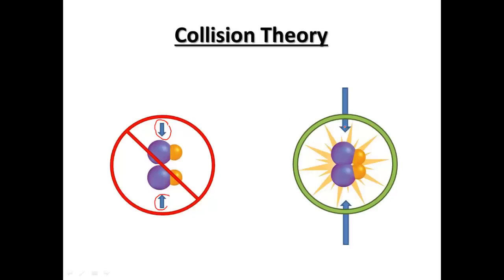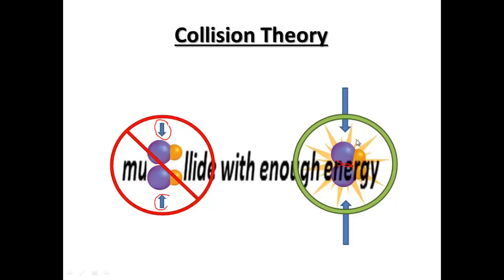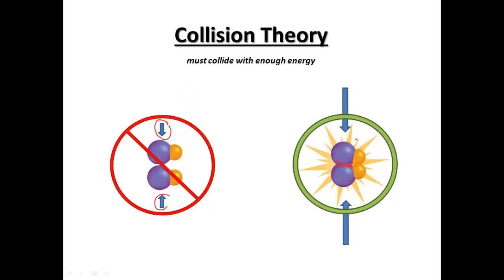We need the molecules hitting each other with enough energy where the electron orbitals will actually overlap with each other. And then we can have that chemical reaction begin to occur. So they must collide with enough energy.